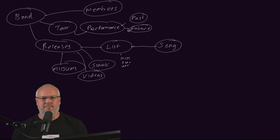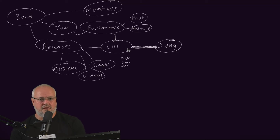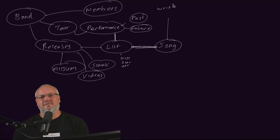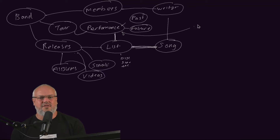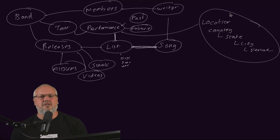We can have past tours with previous performances and future tours with up and coming performances. Performances, like releases, also have lists — they have the set list, which are the agreed songs they'll play in that performance, and the encore list. You can think of the lists on releases and the lists in performances as the same thing. A song has a writer, and that writer could be one of the band members, but that doesn't always make sense — especially if it's a cover version. We also need to think about the location of a performance, which is a hierarchy of country, state, and city, and you could even include the venue.